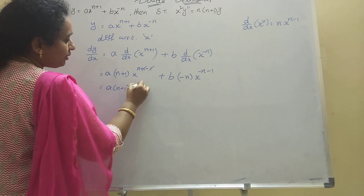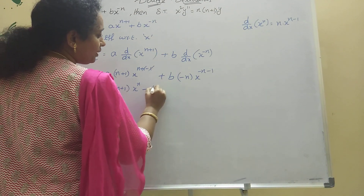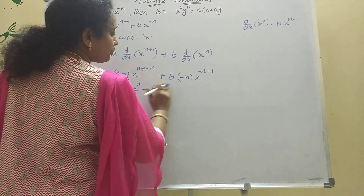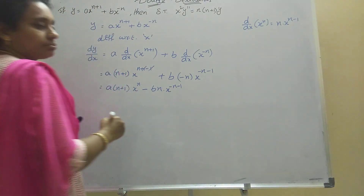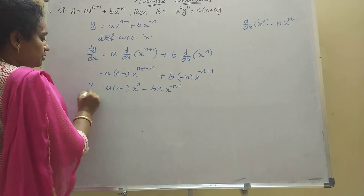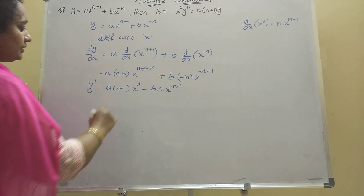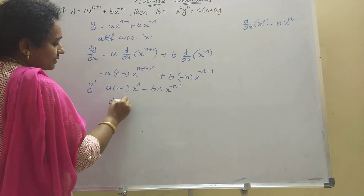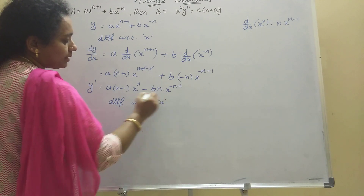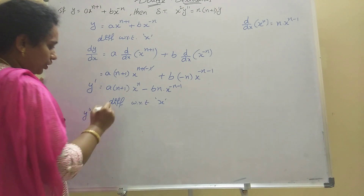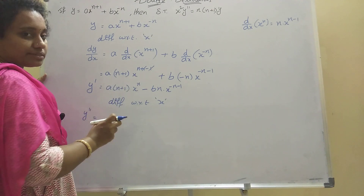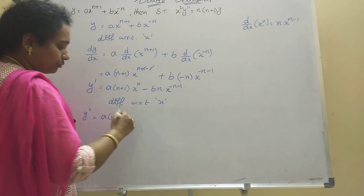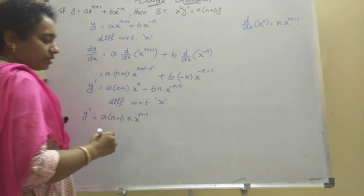So the first derivative y' = a·(n+1)·x^n + b·(−n)·x^(-n-1). Now we need the double derivative, so we differentiate again with respect to x. For the second derivative: a·(n+1) is a constant, and we differentiate x^n to get n·x^(n-1).